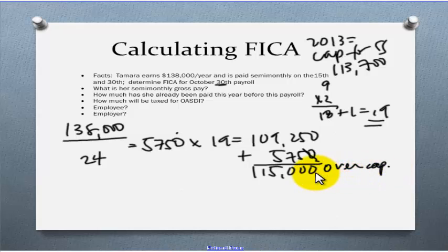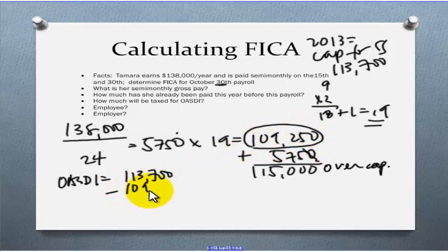Let's figure out how much of this $5,750 that they're going to get paid this period is going to be taxable. We'll take the cap, what would ever get taxed, and we're going to subtract out what they've gotten paid so far. All of that was taxable because we haven't met the cap yet. So, $113,700 minus $109,250 gives us $4,450. That means that of this $5,750 that she's going to get paid this period, only $4,450 is taxable for OASDI. That puts us up to our cap of $113,700 cumulative pay.